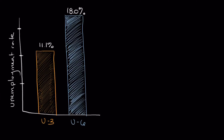In broad strokes, the idea behind the unemployment rate is that it tells us the percentage of people out of work. How these two figures calculate that is a little different, which is why we use both. Ultimately, we're looking at the percentage of people that are out of work — people that want to be employed and are unable to find work.